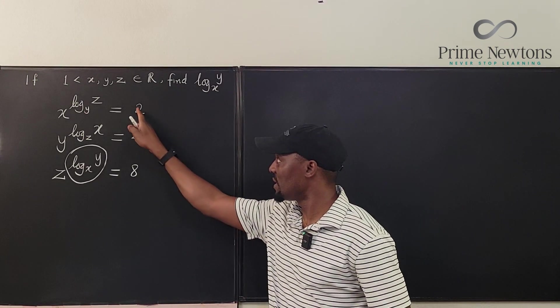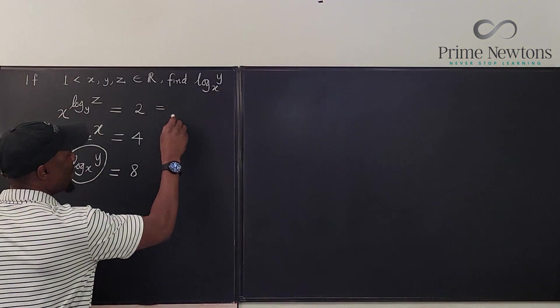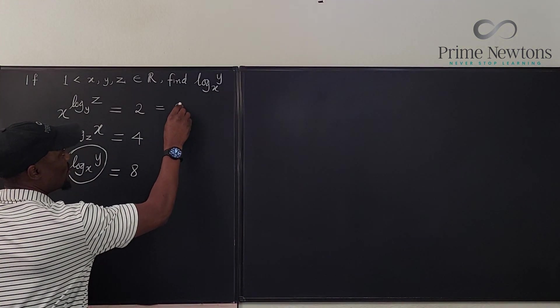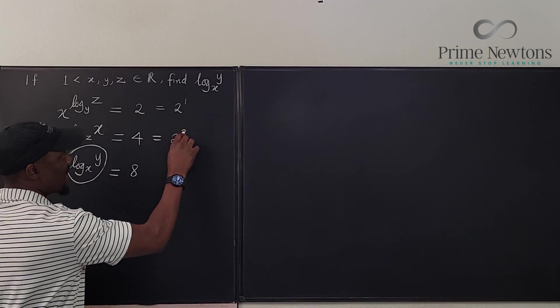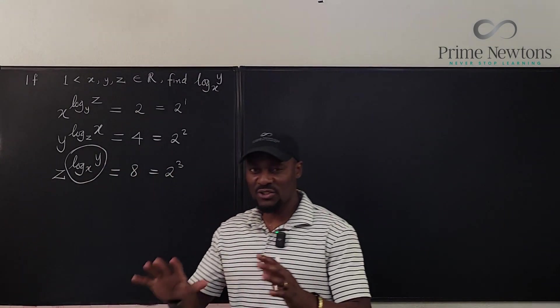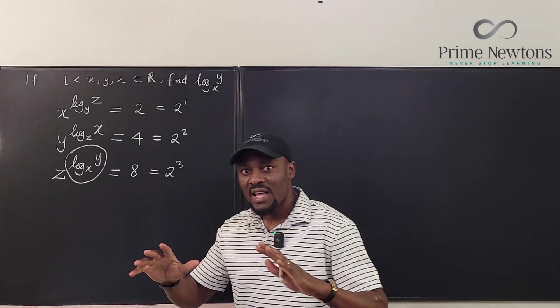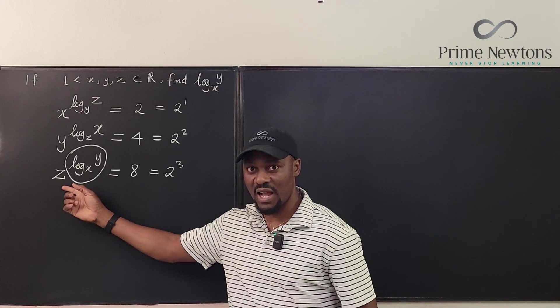So if I rewrote these numbers here, why don't we write this as 2 to the first power, write this as 2 to the second power, and this is 2 to the third power. Somehow, it has some analogical representation to the left-hand side.